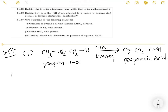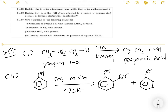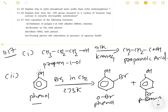Second part: bromine in CS2 with phenol. Bromine in carbon disulfide, which is a non-polar solvent, will react with phenol at 273 K. In a non-polar solvent, bromine will attack the ortho and para positions. OH is an ortho-para directing group, so we will get ortho-bromophenol and para-bromophenol. Para-bromophenol is the major product.